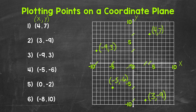Let's move on to number 5, where the x-coordinate is 0 and the y-coordinate is negative 2. Now with the x-coordinate being 0, we don't move right or left on the x-axis from the origin — 0 is right here on the x-axis. And then we need to go down to negative 2, which is right here on the y-axis. So we plot this point right here, 0, negative 2.